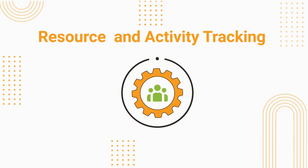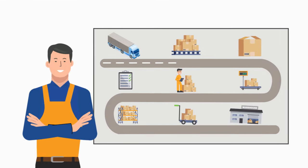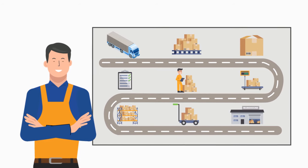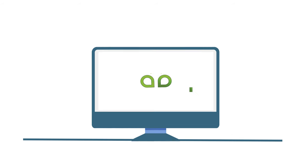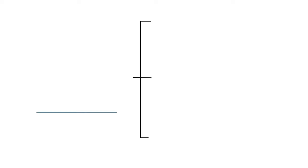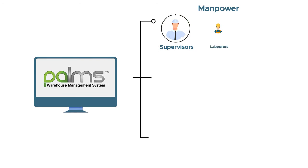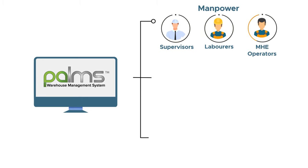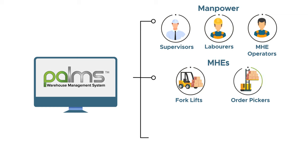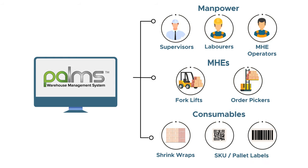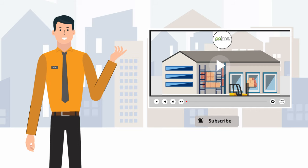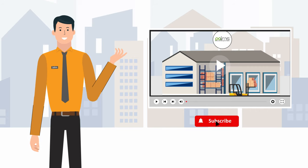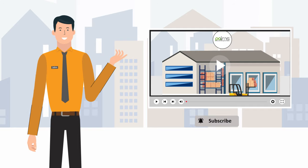At each stage of operations, the system automatically captures and records all activities carried out by logged-in users. Additionally, the system captures resources in terms of manpower utilized — supervisors, laborers, MHE operators like forklifts and order pickers — as well as consumables like shrink wraps and SKU or pallet labels. This concludes the second video in the series on end-to-end warehouse operations. Please refer to the next video to know more about outbound operations.